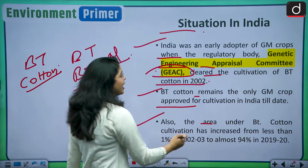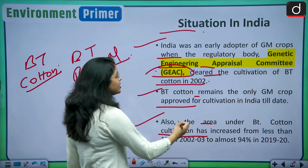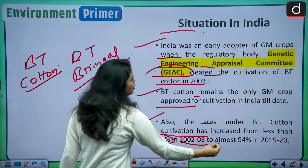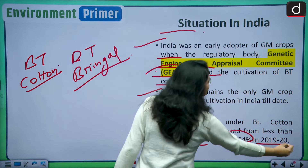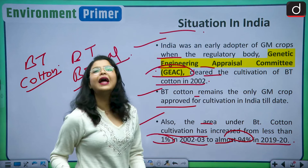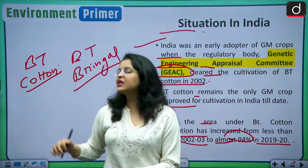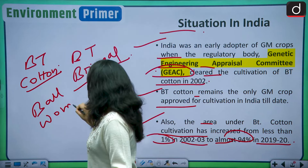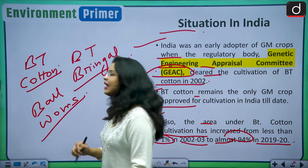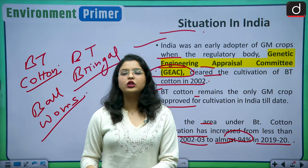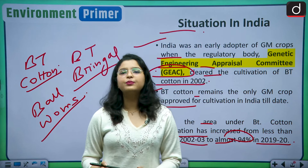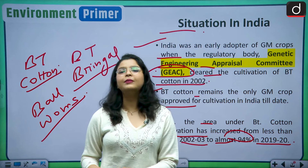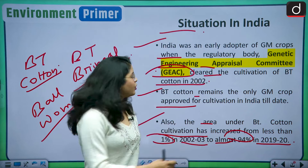The area under BT cotton cultivation has increased from less than 1% in 2002–03 to almost 94% in 2019–20, because BT cotton is resistant to bollworms, a common disease in cotton balls. That is why farmers agree to produce BT cotton — it increases their income and is disease tolerant.